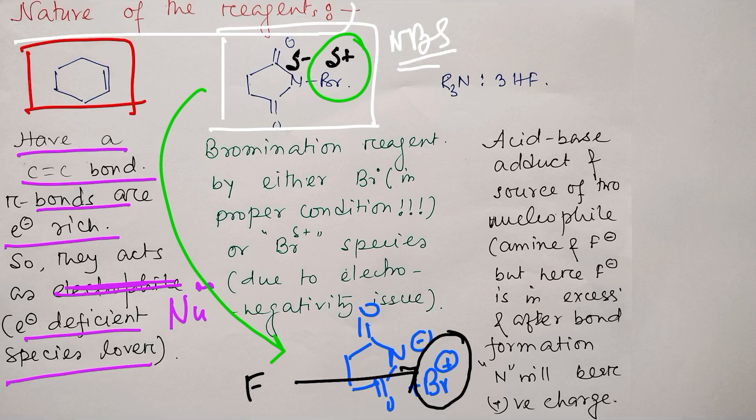When you say this Br plus, a simple word came in our mind: this is electrophilic. So previously you got one nucleophile, now you got one electrophile, so they'll react definitely. Actually, NBS is a source of bromination reagent in two ways: one is Br plus cationic bromine, or another is radical bromine.